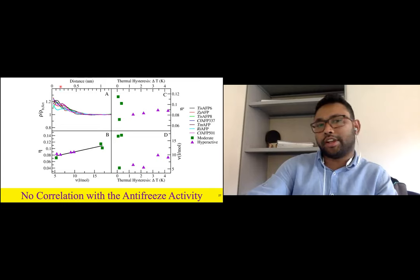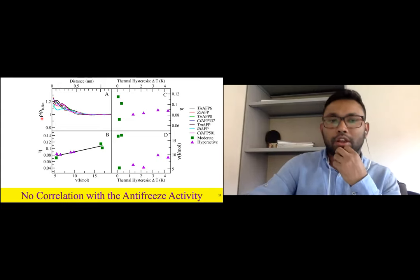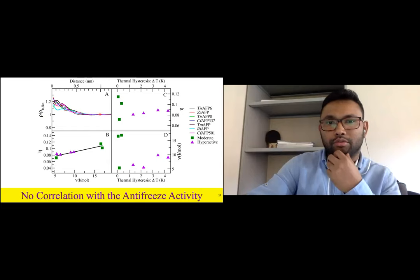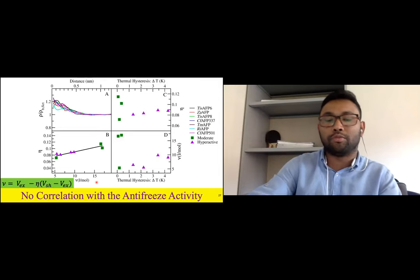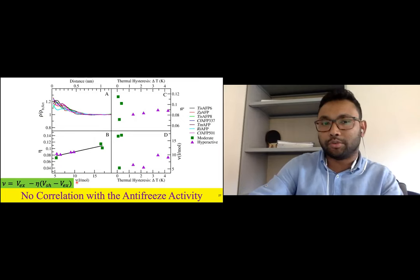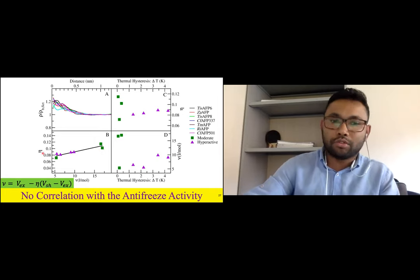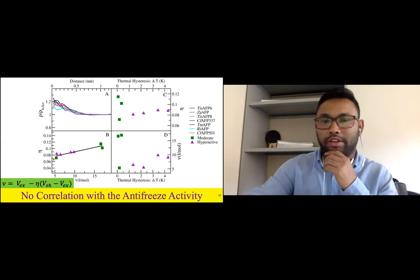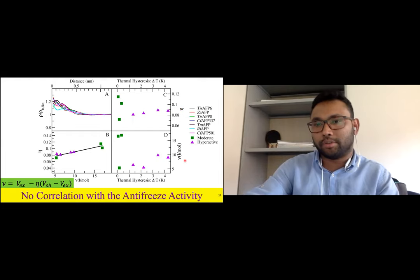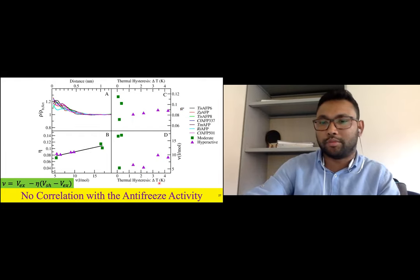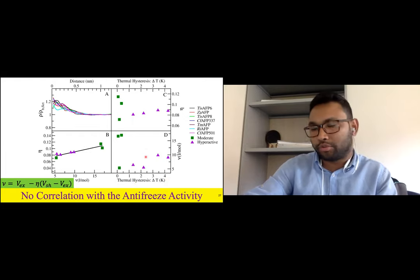We searched again for differences through the fictitious calculation but saw absolutely no changes. We then calculated the relative density increment and partial molar volume — which represents protein size — for every protein. As seen earlier, relative density increment is proportional to protein size. We plotted relative density increment and partial molar volume against thermal hysteresis — the activity of each protein — and found absolutely no differences.